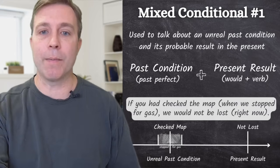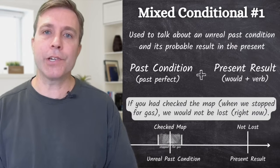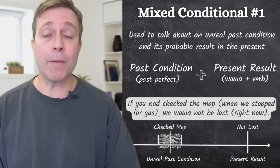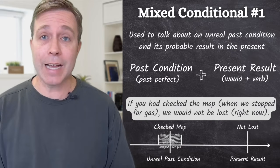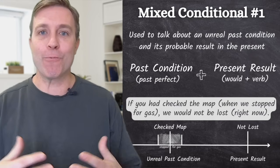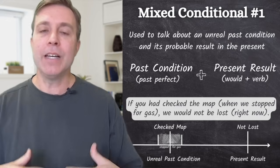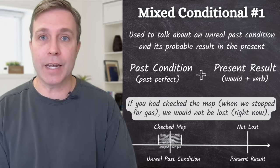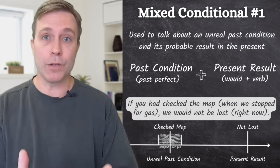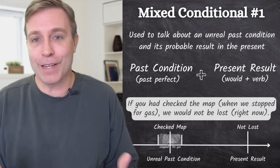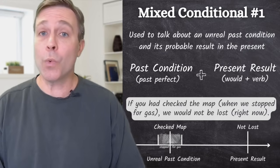Here's an example: if you had checked the map, we would not be lost. To be more specific: if you had checked the map when we stopped for gas, we would not be lost right now. The unreal past condition is that you didn't check the map, and the present result is that we are lost. More examples: if you had taken the train, you would be here. If I had eaten dinner, I wouldn't be hungry right now. Or with the result first: I would have a new car if I had won the lottery — but I didn't win, so I don't have a new car.